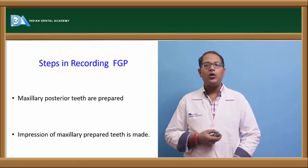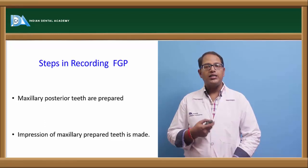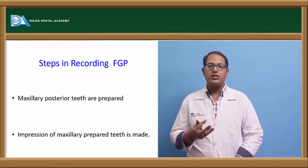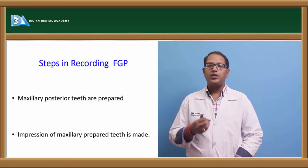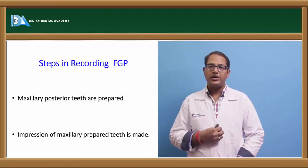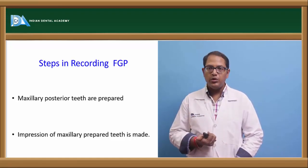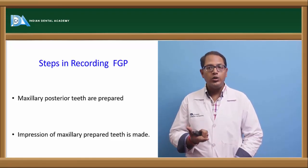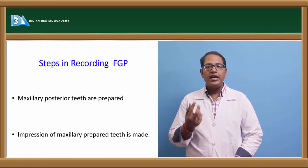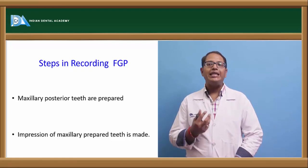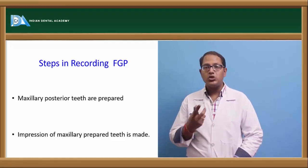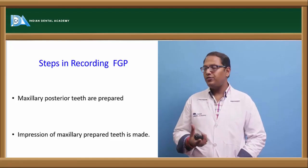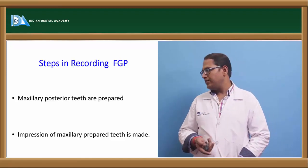Now let's see the steps to record the functionally generated path, and before the steps, we need to know the different articulators we can use: the verticulator, the twin stage occluder, hinge articulator, or a plain line articulator. These are the instruments required to fabricate a functionally generated path.